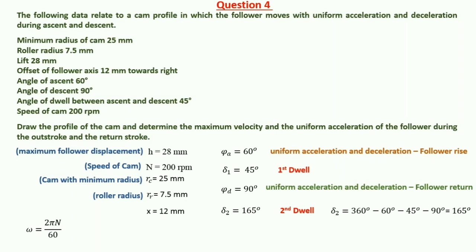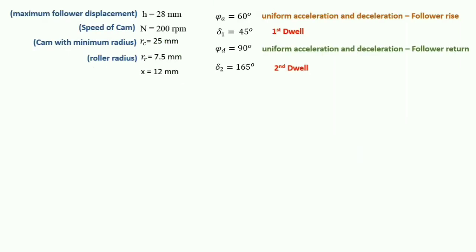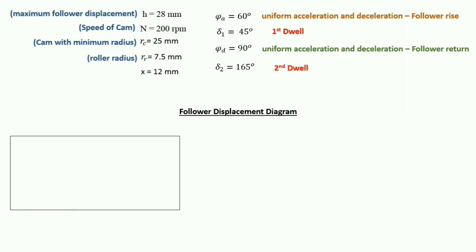First, we calculate angular velocity: omega equals 2 pi N by 60, which equals 20.94 radians per second. Now we will move on to make the follower displacement diagram. Since we have uniform acceleration and deceleration, first we will create a rectangle box.